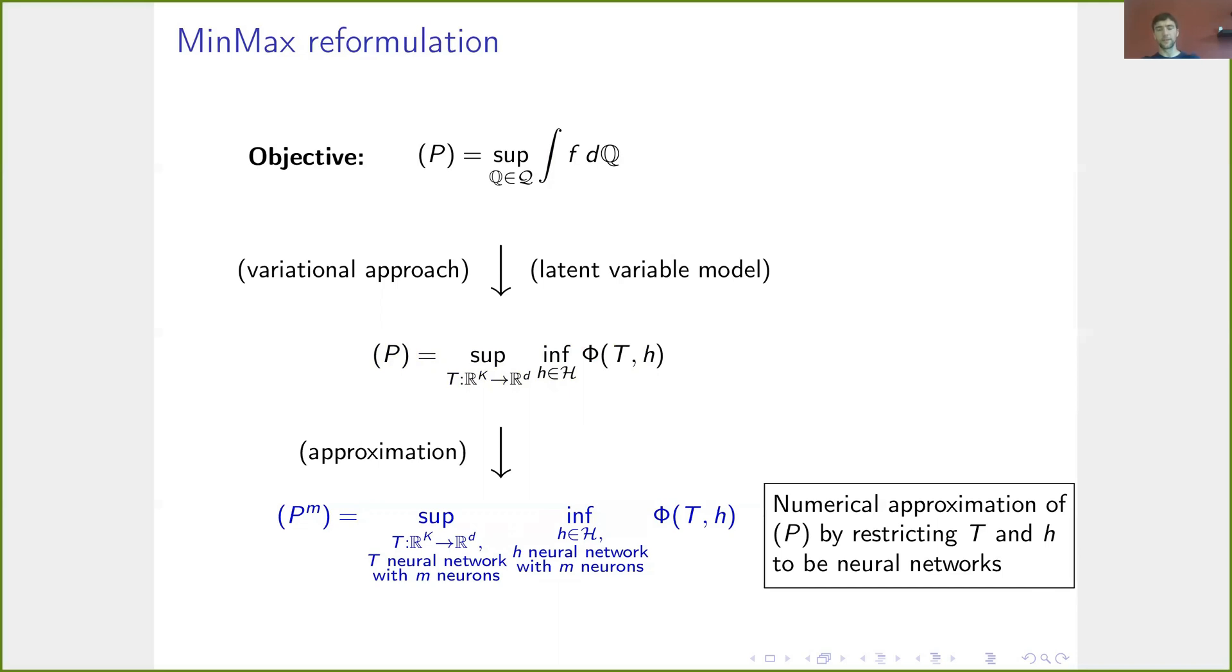Here, this formulation is often also seen as a zero-sum game between the functions T and the function h, where the function T is seen as the generator network because it generates solutions to our optimization problem, and the function h is like the discriminator network because it tries to discriminate whether the candidate solution satisfies the given constraints or not.